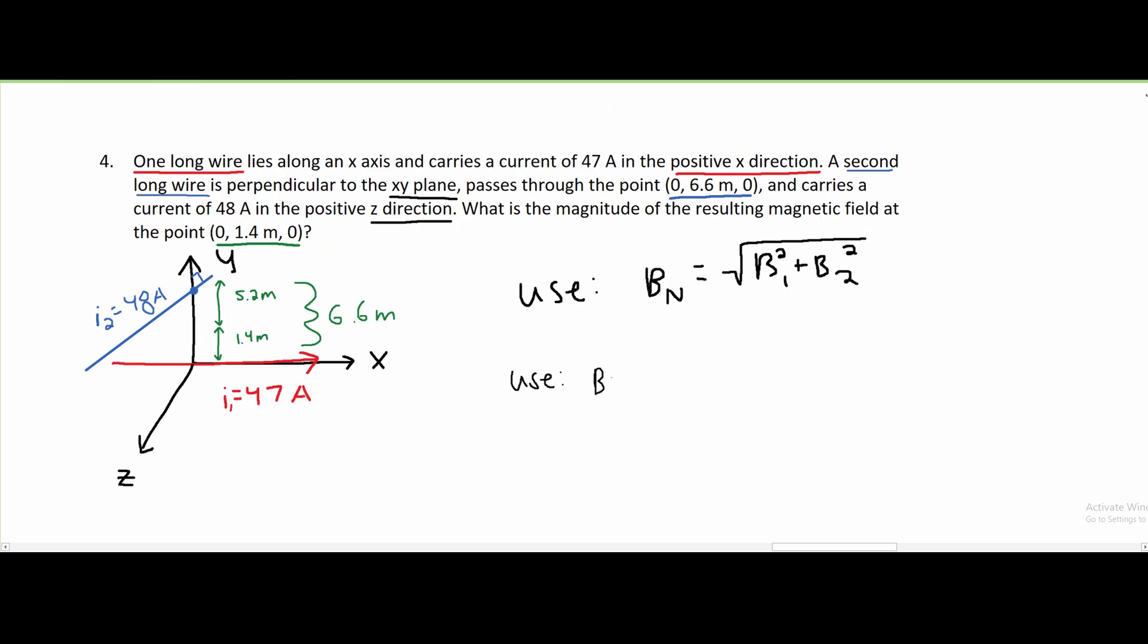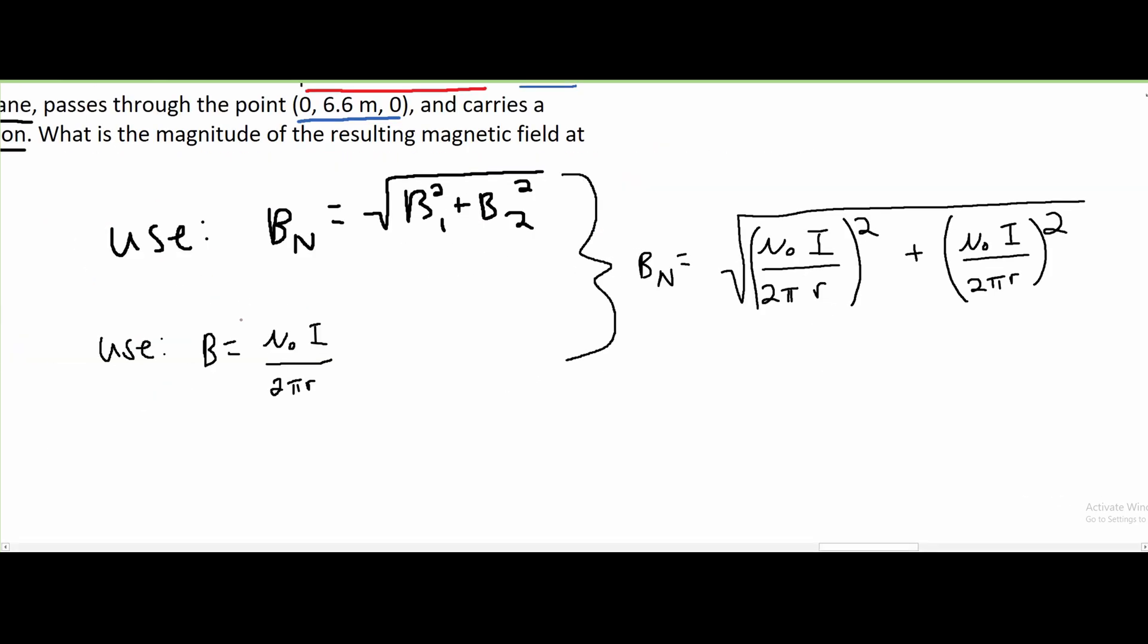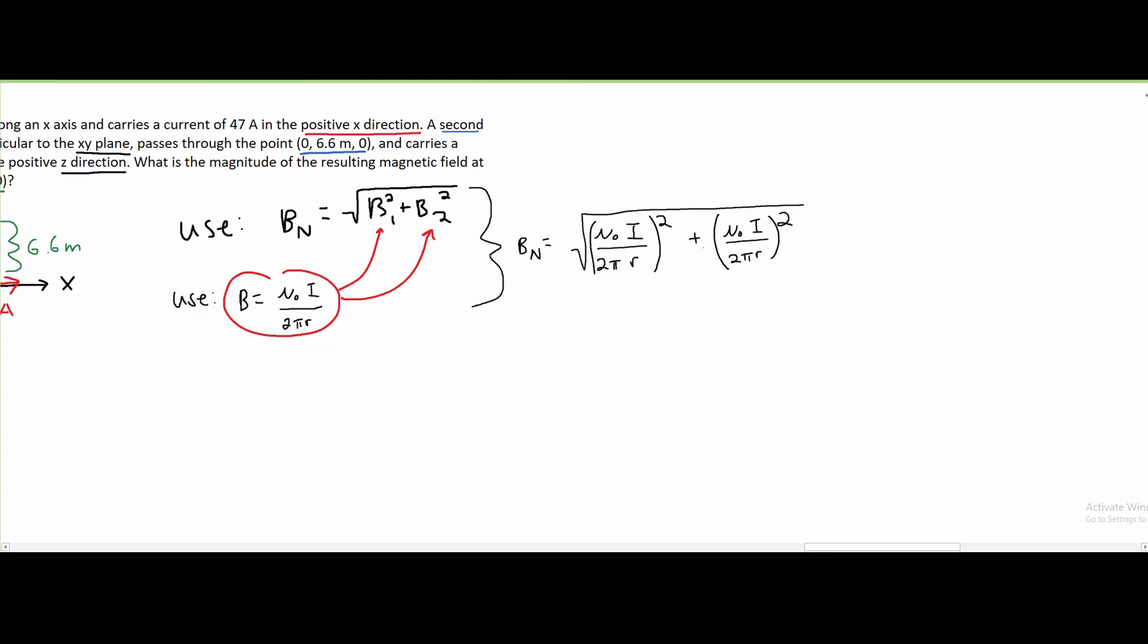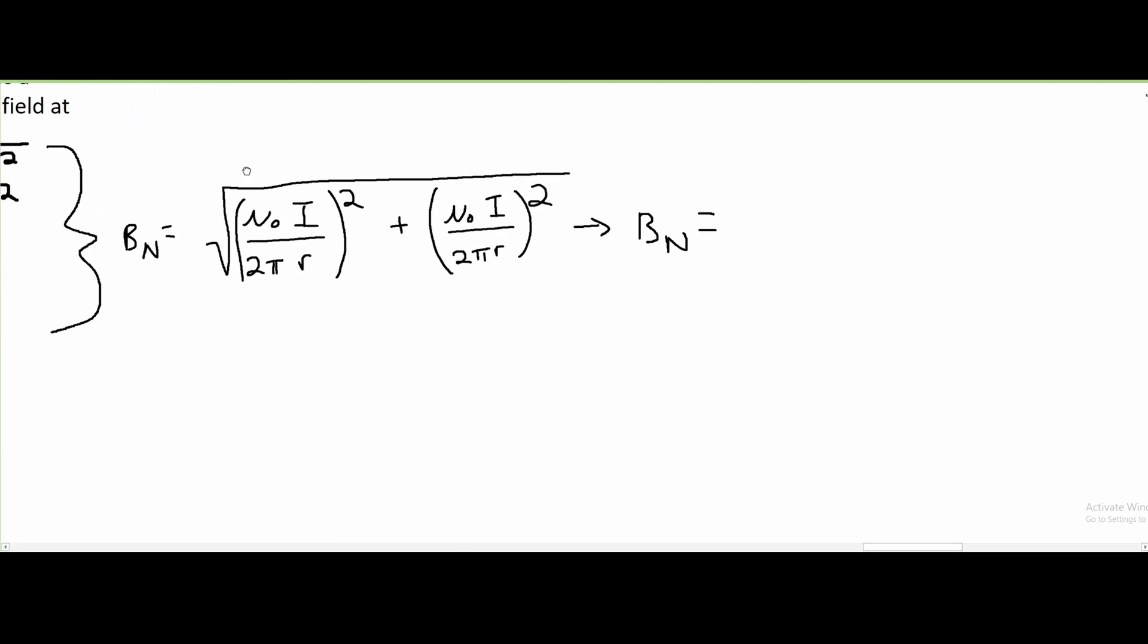A single B is just equal to the constant μ₀ times the current divided by 2πr. If we write these in together, we are going to get a larger formula. In here, after we put this into here and here, we are going to get this. From here, we can factor out our constants to make this equation smaller. We know that our μ₀ is a constant, so we can square that for both and then square root it, which is just going to leave us with a μ₀.